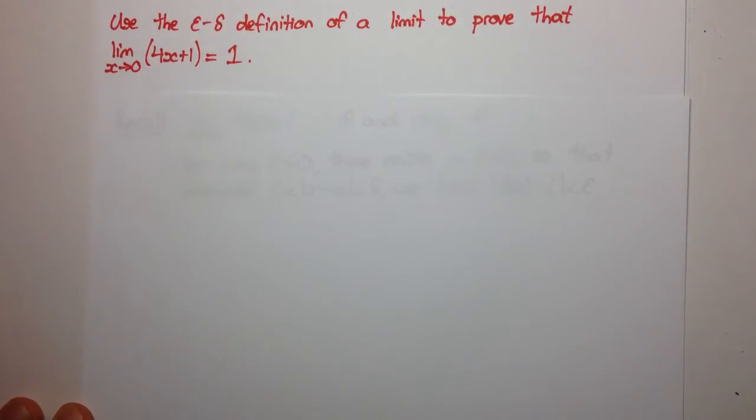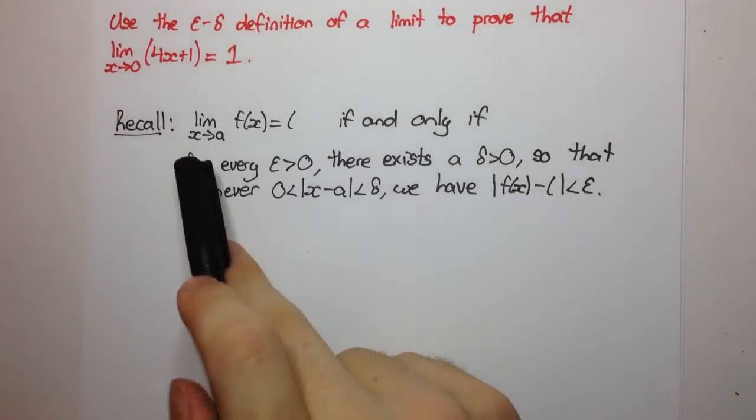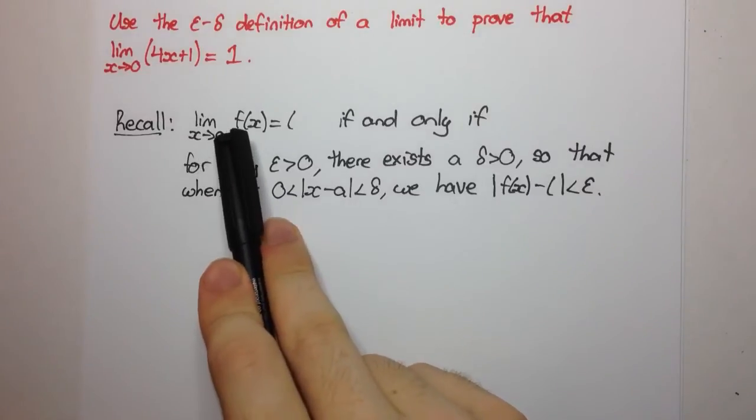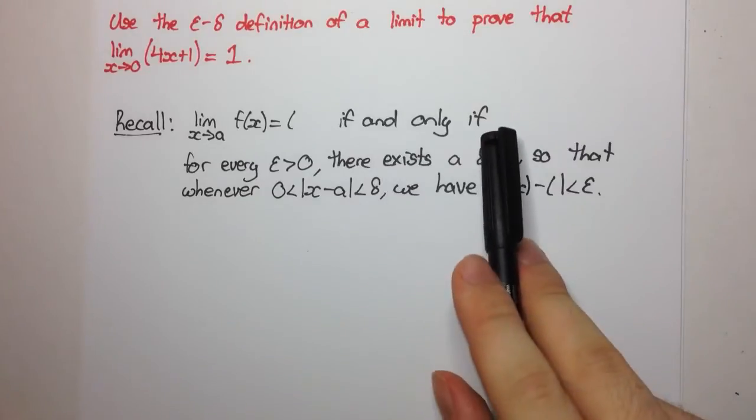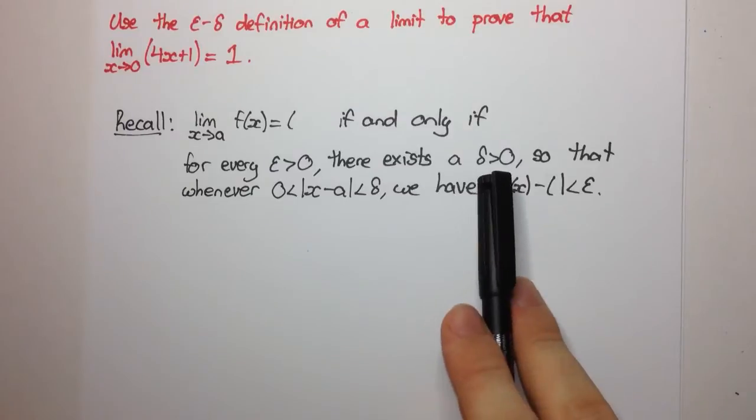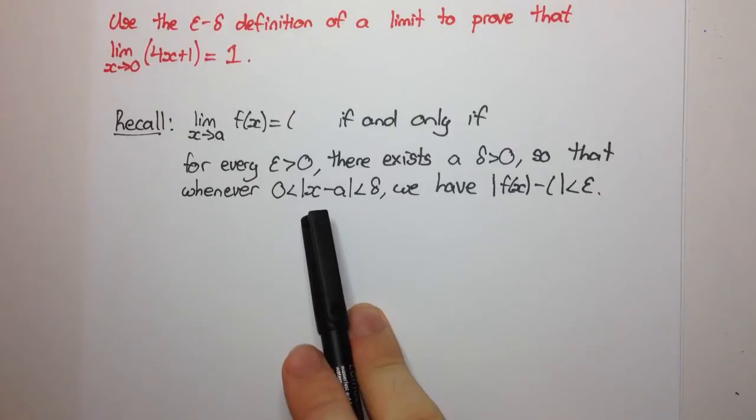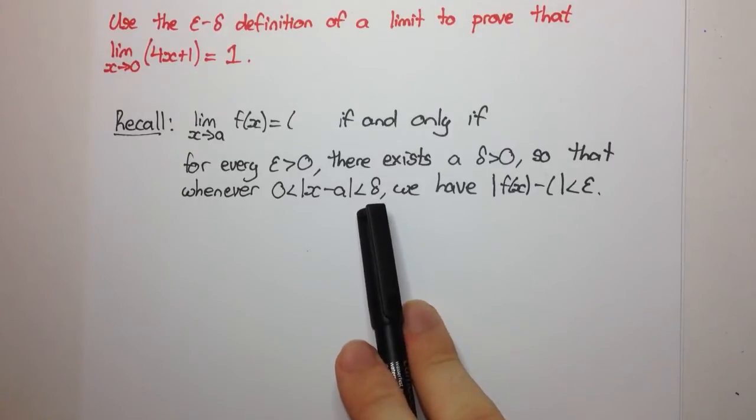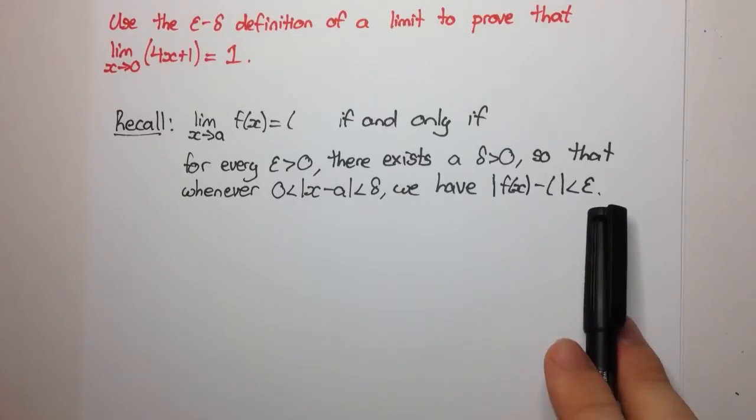So let's first of all just recall the definition, the epsilon, the precise definition of a limit. It says that the limit as x approaches a of f of x exists and equals l if and only if for every epsilon greater than 0 there exists a delta greater than 0 so that whenever 0 is less than the absolute value of x minus a which is less than delta, we have that the absolute value of f of x minus l is less than epsilon.